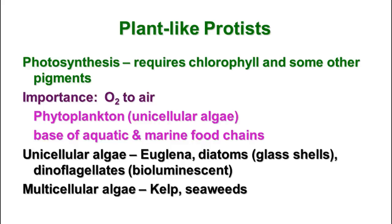Phytoplankton are unicellular algae that float in the ocean and are the base of aquatic and marine food chains, just like grass is the base of most food chains on land. There are unicellular algae—including euglena, diatoms that have glass shells, and bioluminescent dinoflagellates that give off their own light in the water—and multicellular algae that include kelp and seaweed.